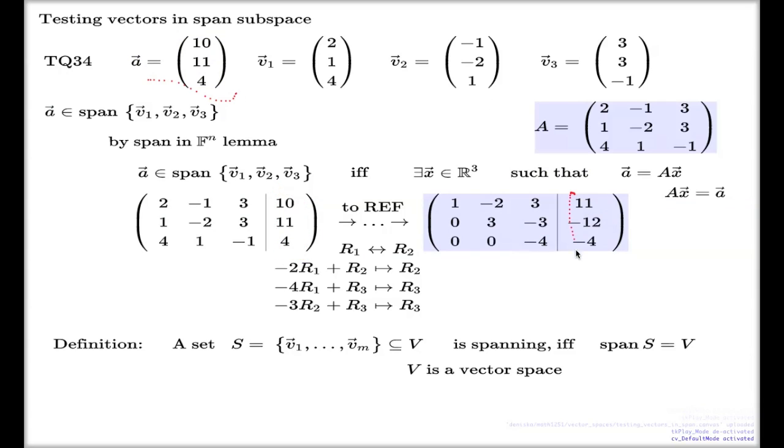it will be different right-hand side here in my row echelon form reduction, but pivots still will be on the left-hand side. All of them will be on the left-hand side. Meaning that even though I take another vector, the system will still be solvable.